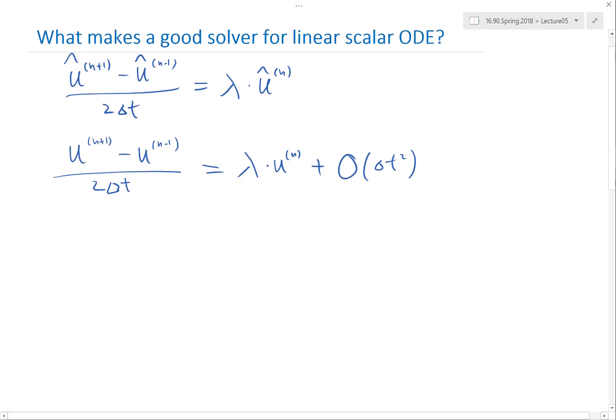Okay, so let's see. So when we move the known, the next step in error analysis is what? The next step is to combine these two equations by defining e of n being u hat of n minus u of n. Subtracting these two equations gets me e of n plus 1 minus e of n minus 1.